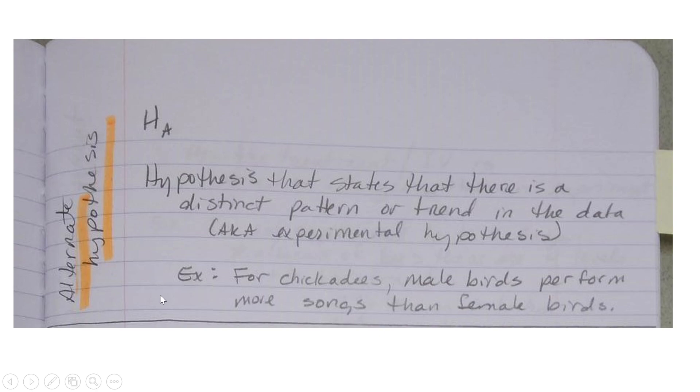An example of an alternate hypothesis showing a distinct pattern or trend: for chickadees, male birds perform more songs than female birds. So this is showing the trend in the data, and this is what you hypothesize about male birds.